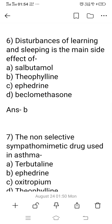Question 6: Disturbances of learning and sleeping is the main side effect of which drug? Option B: Theophylline. Option C: Ephedrine. Option D: Beclomethasone. The right answer is option B, Theophylline — the xanthine derivative anti-asthmatic drug — whose main side effect is disturbances of learning and sleeping.